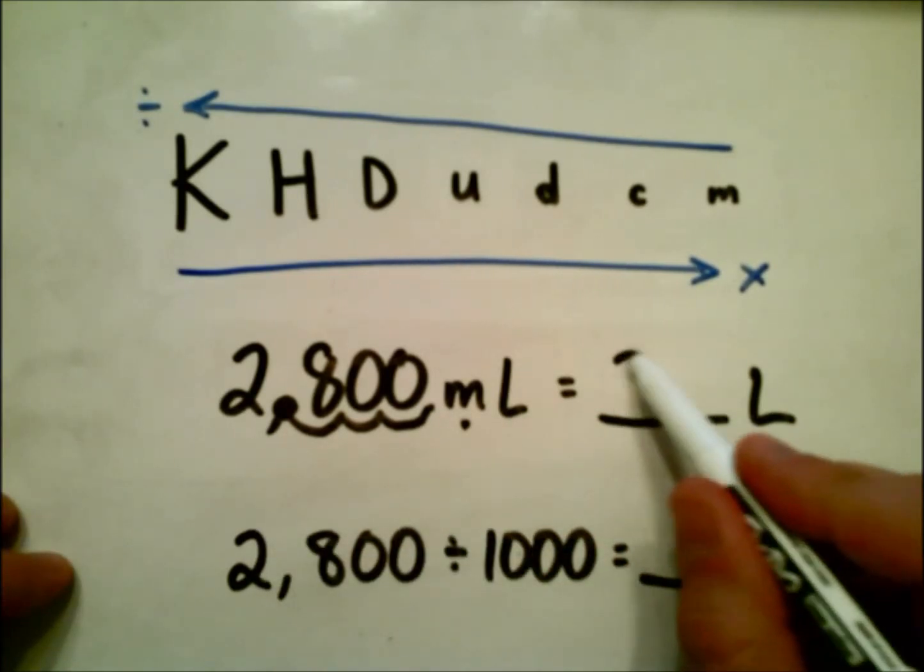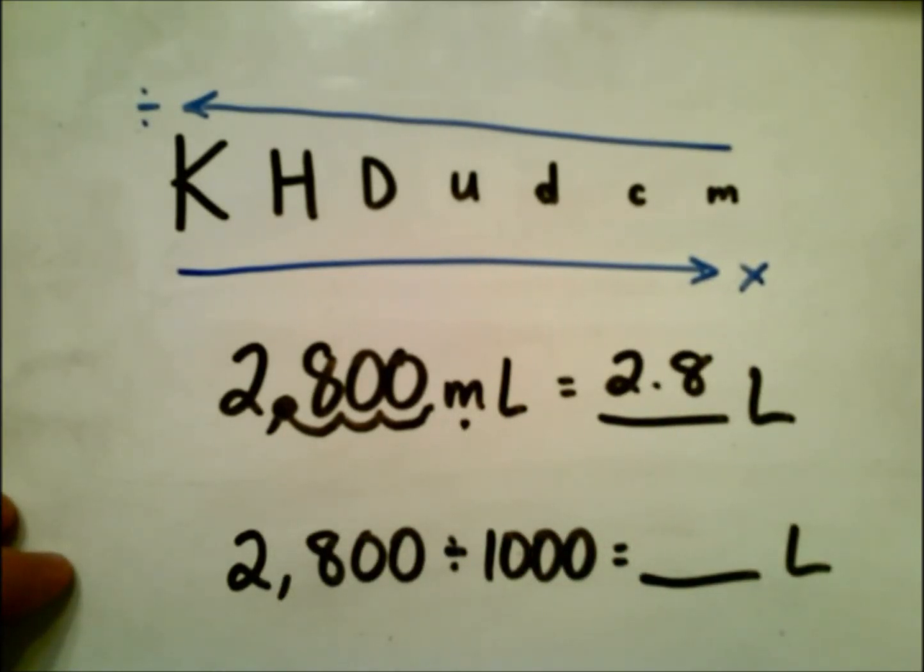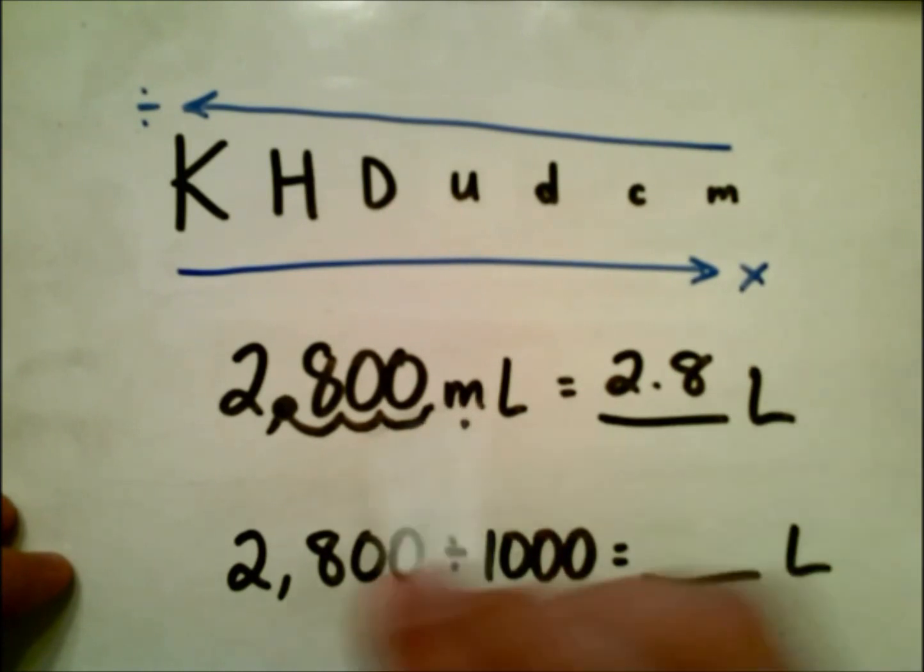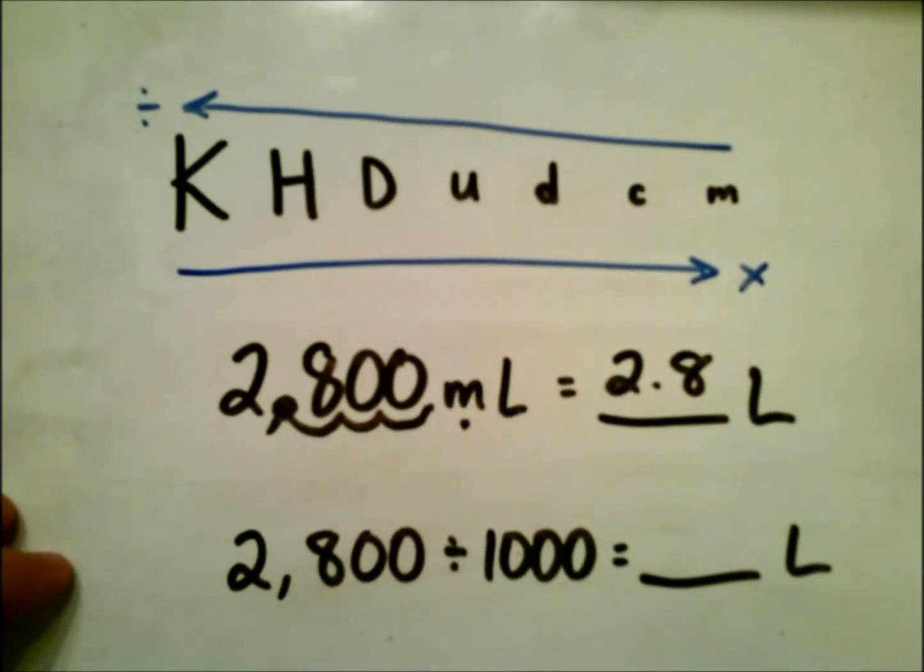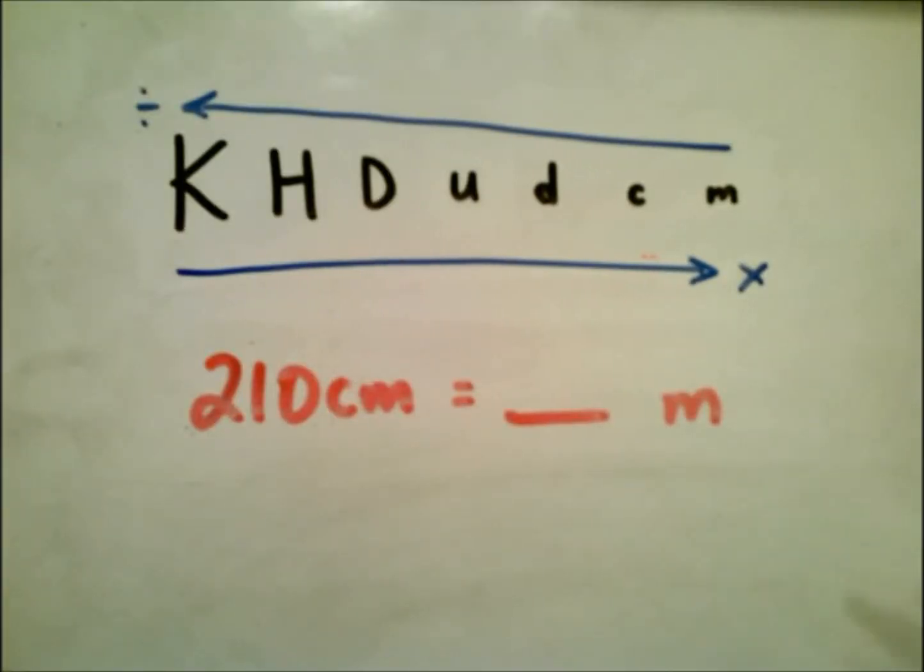So we get an answer of 2.8 liters is the same as 2800 milliliters. Let's do one final example here.